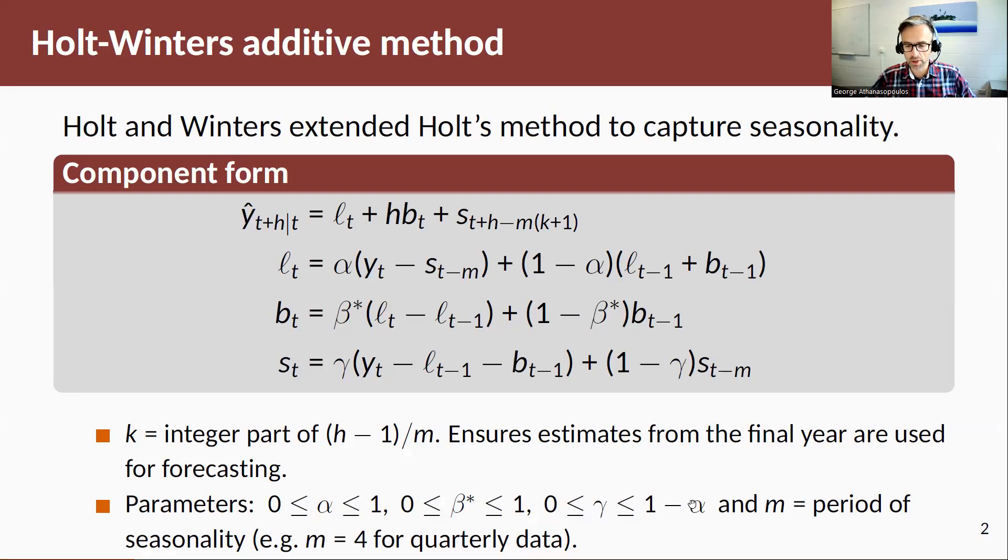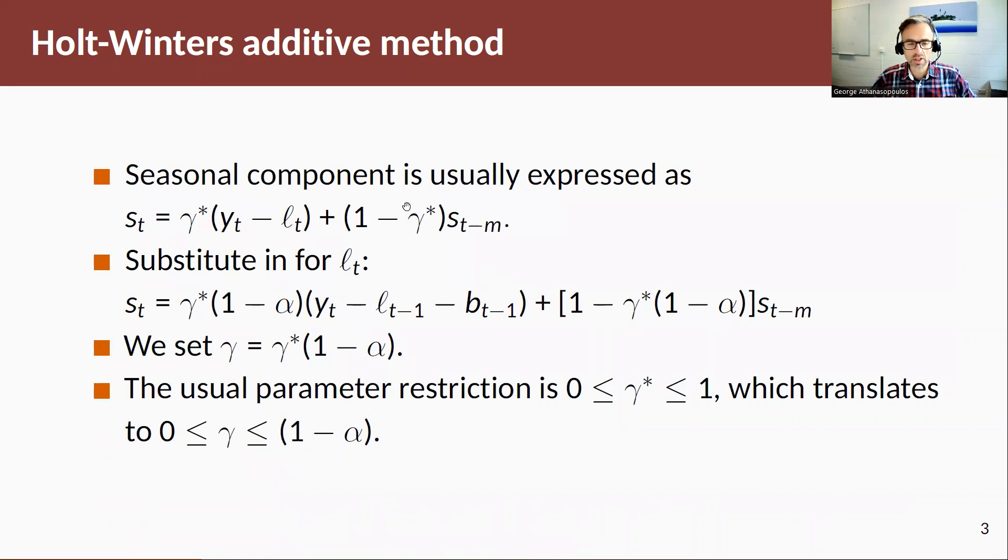Now, let me talk a little bit about this gamma smoothing coefficient. Traditionally, the way Holt and Winters had presented the method was using this equation. Now, just taking this and re-parameterizing it a little bit, we end up with getting this equation here where gamma is equal to gamma star times 1 minus alpha, where gamma star is the original parameter. And hence, if gamma star is between 0 and 1, as originally depicted by Holt and Winters, this translates into gamma being between 0 and 1 minus alpha.